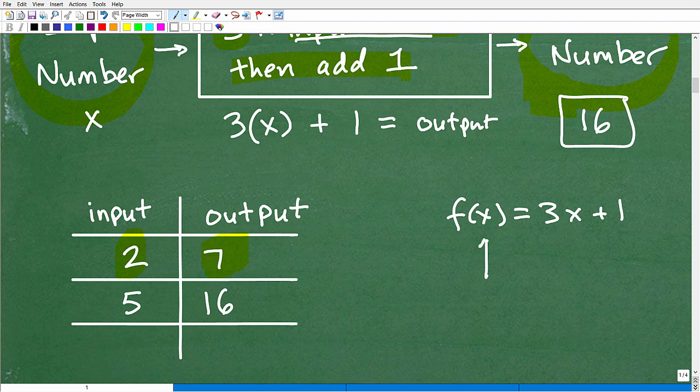All right. Let me just erase this. This rule that we're talking about, this function rule as F of X is equal to three X plus one. This X is my input. Okay. And wherever I see an X, I'm going to plug in my input value. All right. And then when I do all my rule, this is my rule. When I apply my rule, I get some sort of output value and that is Y.